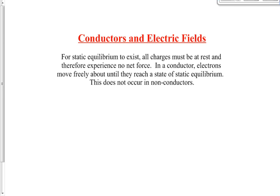When we have a conductor, electrons are relatively free to move about that conductor. With an insulator, that's not the case. If we have extra electrons on that conductor, those extra electrons are going to repel each other. We're not talking right now about all of the electrons in this conductor — we're talking about the extra ones.